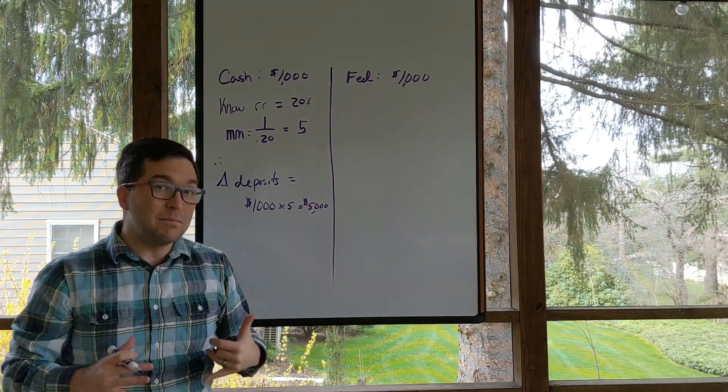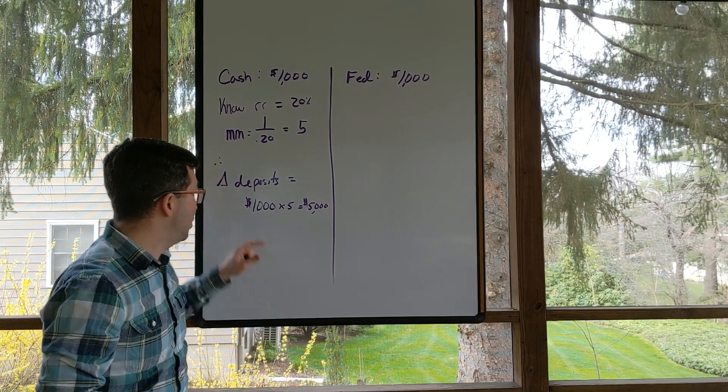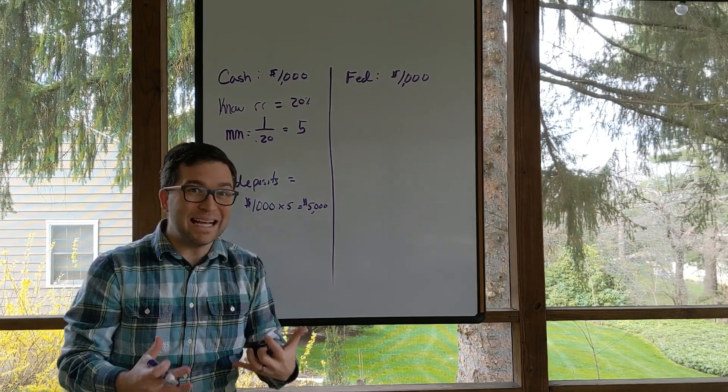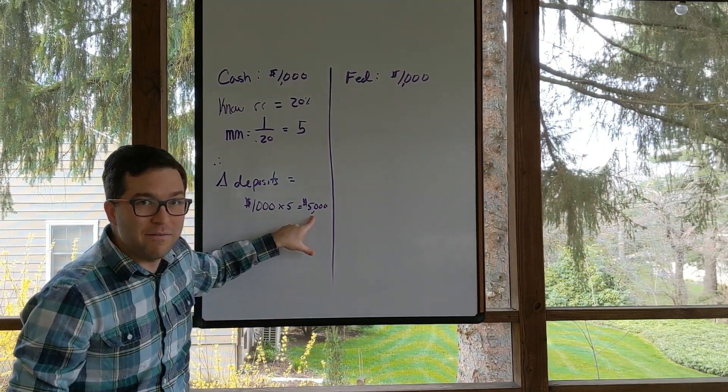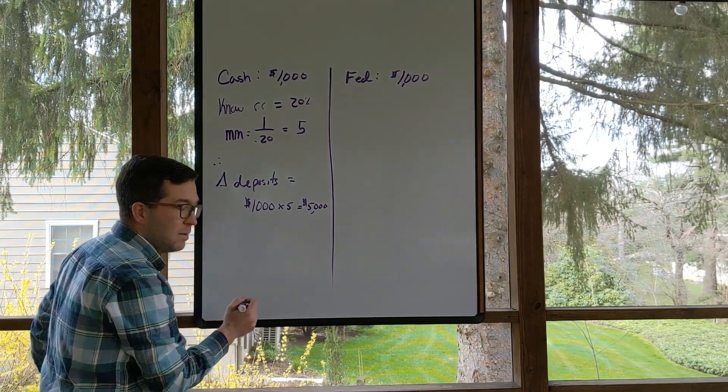The simple deposit multiplier tells us how much deposits will change by maximum if we have an initial deposit. So overall deposits change by 5,000. But what about money supply?